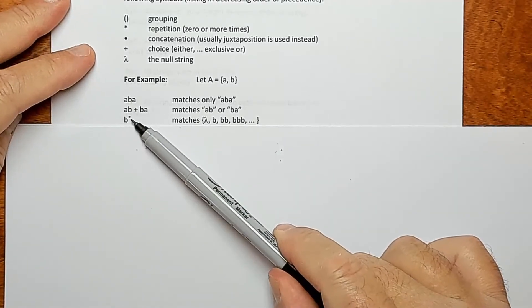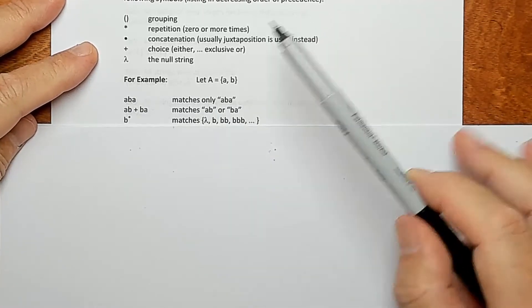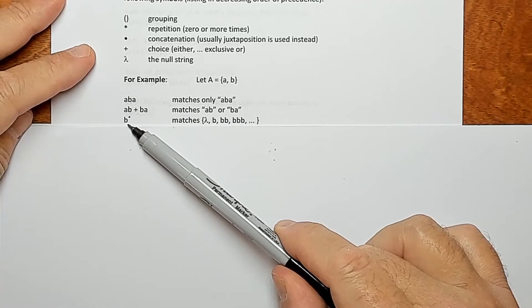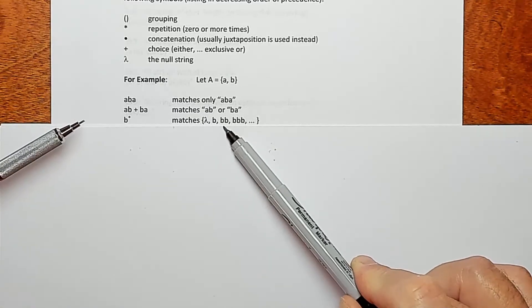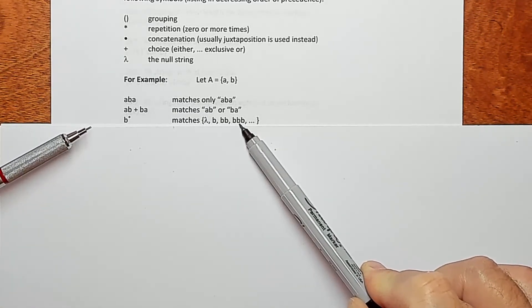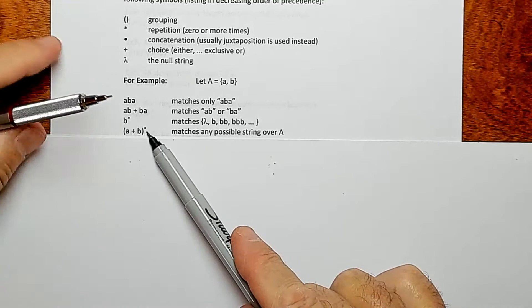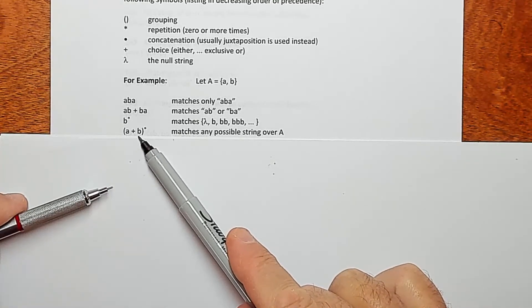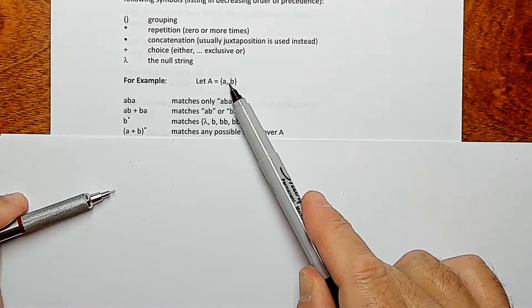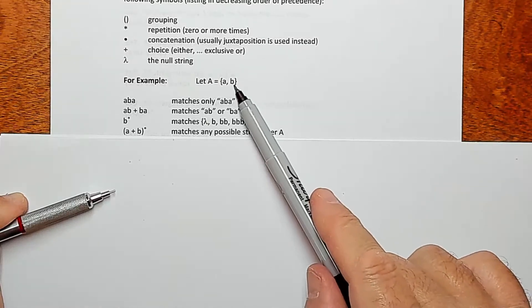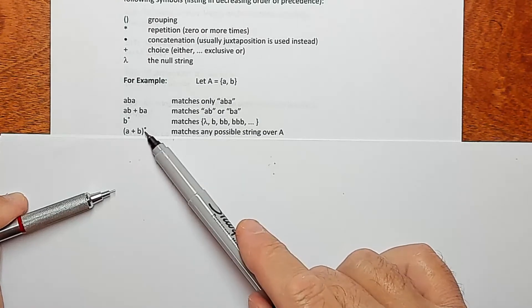So this pattern here would match the string AB or the string BA. Okay, this thing here, the star operator applied to B means that we can choose as many B's as we want. We could choose zero B's, which would be lambda. Or we could choose one B, which would be B. Or we could choose two B's, BB, all the way out to infinity. Okay, this thing here means that we could choose A or B zero or more times.